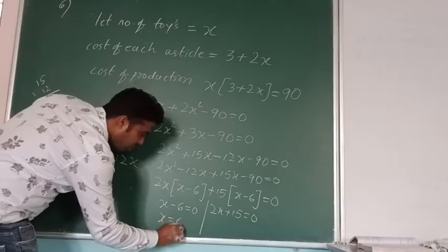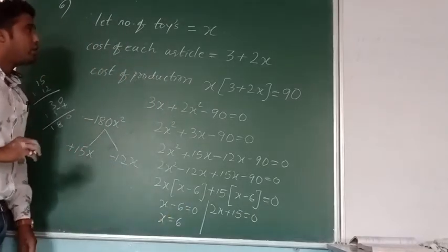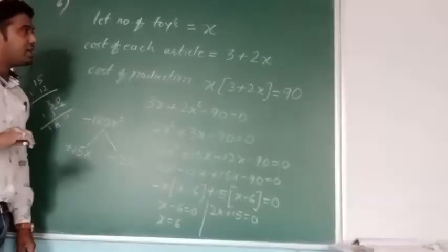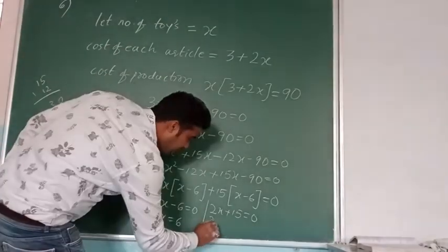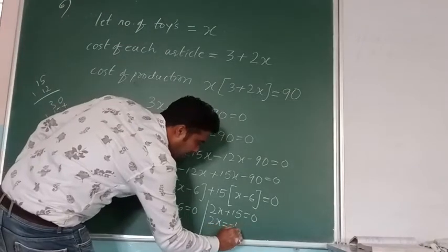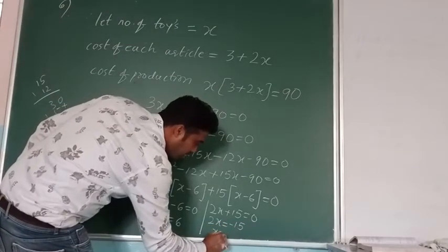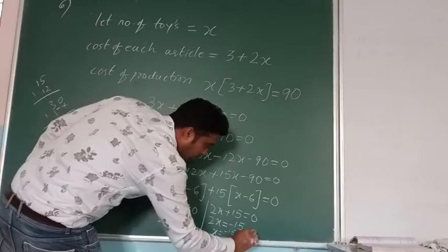This becomes x equals 6. It means the number of toys are 6. This we can reject because it becomes negative, x equals minus 15 by 2. This we have to reject.